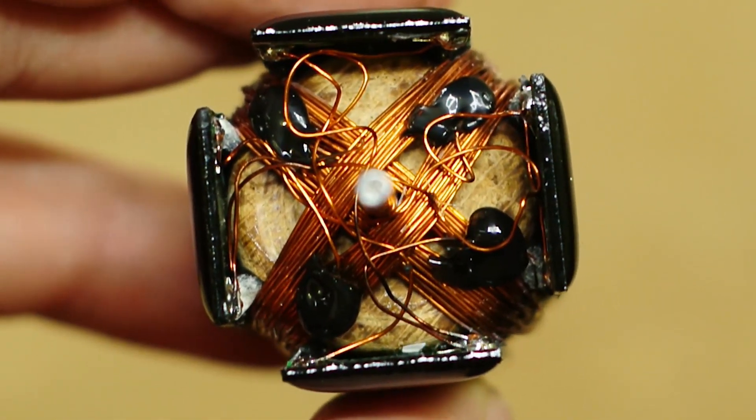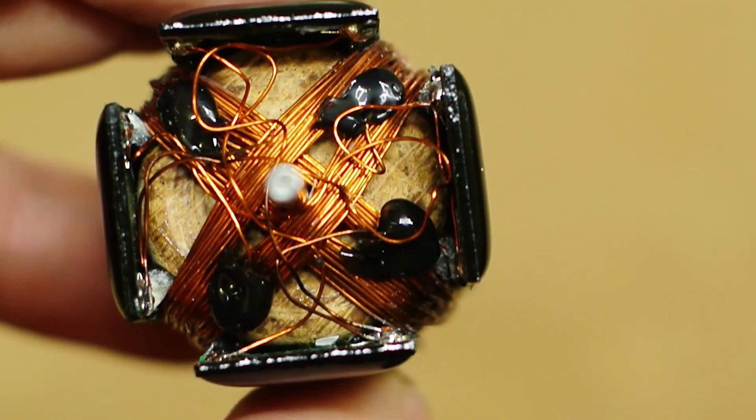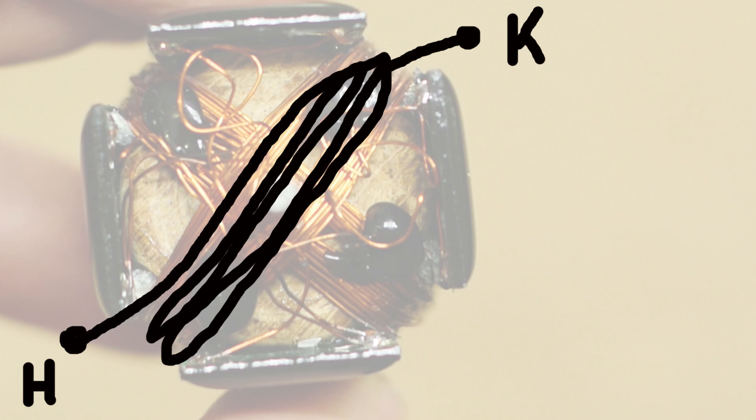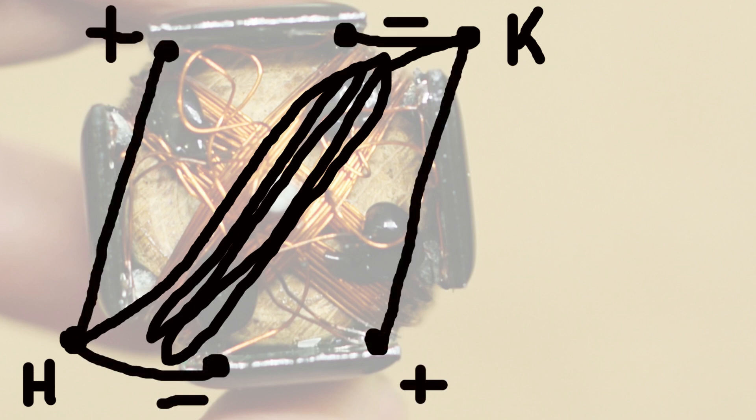Now I want to show you the connection using the example of the first winding. Number one is the beginning of the winding, number two is the ending. The second winding is connected likewise to the second pair of solar panels.